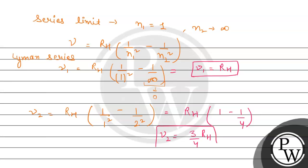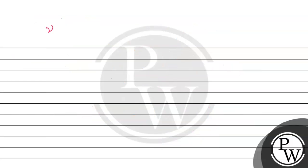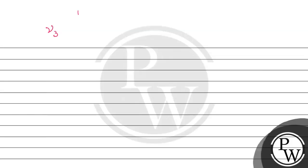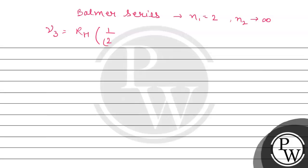This is the value for ν2. Now we solve for ν3, which is the series limit of the Balmer series. For the Balmer series limit, N1 = 2 and N2 = infinity. So ν3 = RH × (1/2² − 1/∞²) = RH × (1/4 − 0). Therefore ν3 equals the Rydberg constant divided by 4.